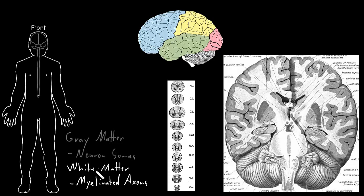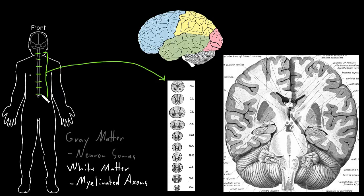The distribution of gray matter and white matter is a little different between the spinal cord and the brain. If we look first at the spinal cord, here we have a nice illustration of different sections of the spinal cord — different levels, like if we made little sections cutting a loaf of bread from top to bottom and looked down at those sections. What we see in the spinal cord is that most of the gray matter is on the inside, in this H-shape or butterfly shape, and the white matter is mostly on the outside.